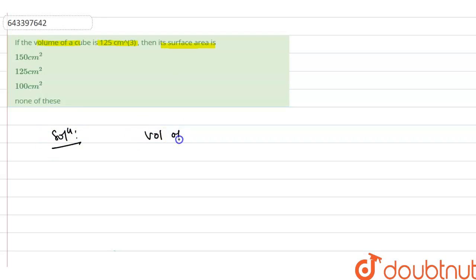Volume of cube will be a cubed, and what is this? This is 125. Now you will take cube of a. So as we know that if you take a cube, this will be 125.